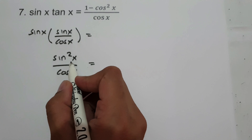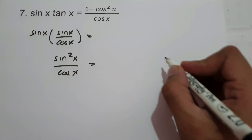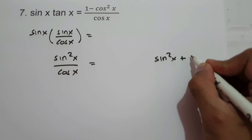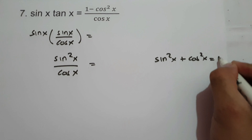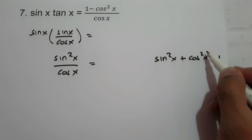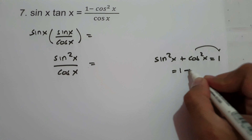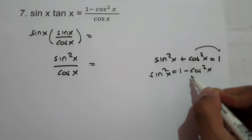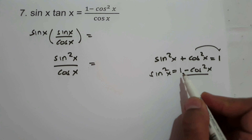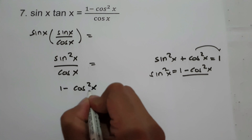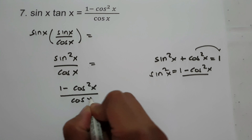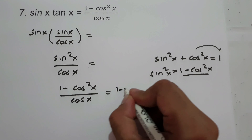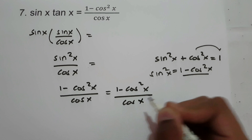Since we have sine squared x in the numerator, it gives us the idea that we are going to use Pythagorean identities, that is sine squared x plus cosine squared x equals 1. If we move cosine squared x to the side of 1, it gives us 1 minus cosine squared x, and this will be the value of sine squared x. So let us change sine squared x as 1 minus cosine squared x over cosine x. So therefore, we prove that sine x times tangent x is equal to 1 minus cosine squared x over cosine x.